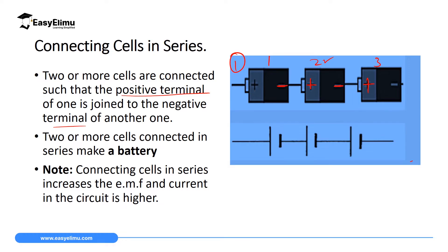So when you arrange or connect cells in series, you arrange them in a way that the positive terminal of one cell is connected to the negative terminal of the other. If we draw this in a simple circuit as in diagram two, the long arm represents the positive terminal connected to the negative terminal, the positive terminal connected to the negative terminal, and then the positive to the negative terminal. So when you have such an arrangement, we call it series arrangement.